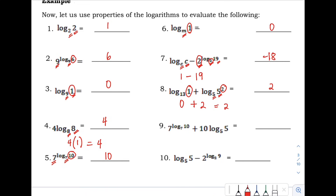Number 9: we have 7 raised to the logarithm of 10 with base 7 — the bases match, so that is positive 10. Plus 10 times the logarithm of 5 with base 5 — the bases match, so that equals 1. Then 10 plus 10 times 1 equals 20.